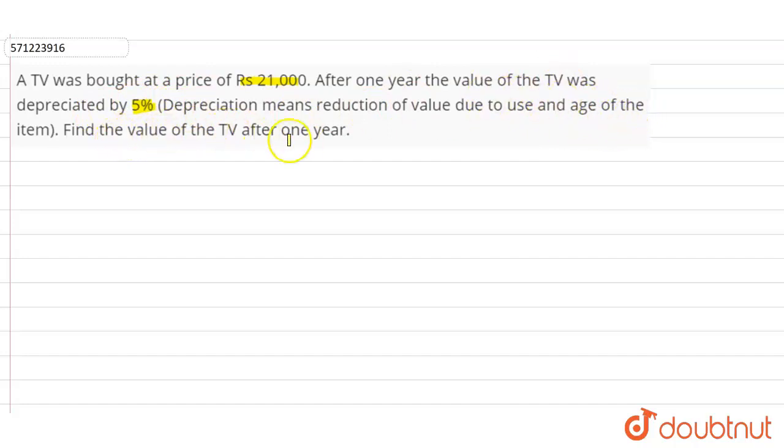So it is given that the cost price of TV is rupees 21,000. Now it is saying that TV was depreciated by 5%. Depreciation means reduction in the value, reduction in the price.